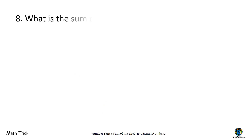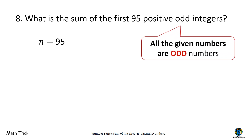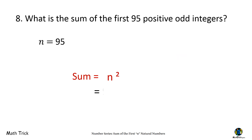What is the sum of the first 95 odd numbers? The number of terms is 95. Since the given numbers are all odd, we square N to get the sum. 95 squared is 9,025. The sum of the first 95 odd numbers is 9,025.